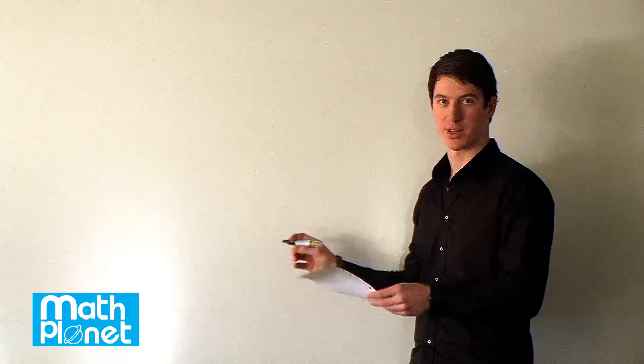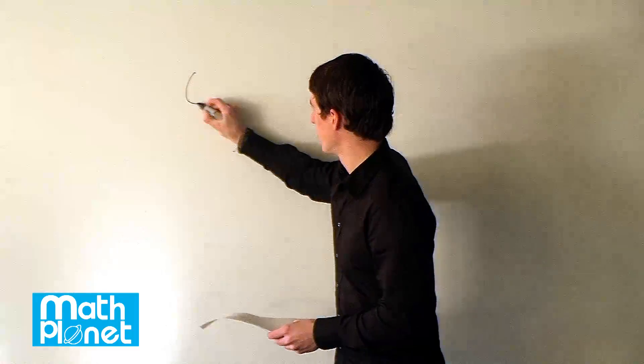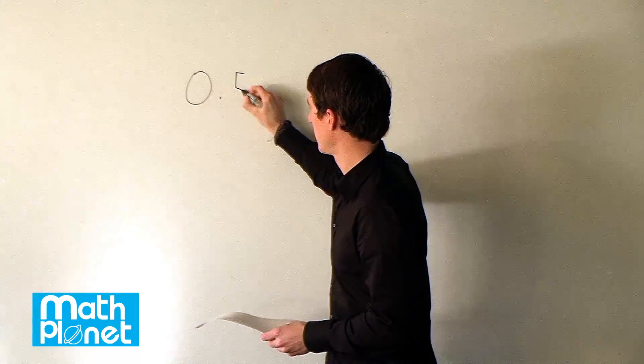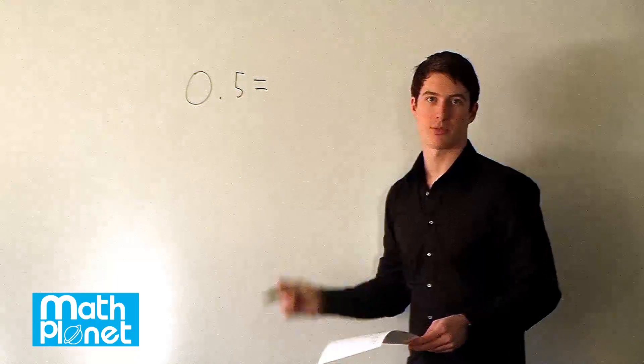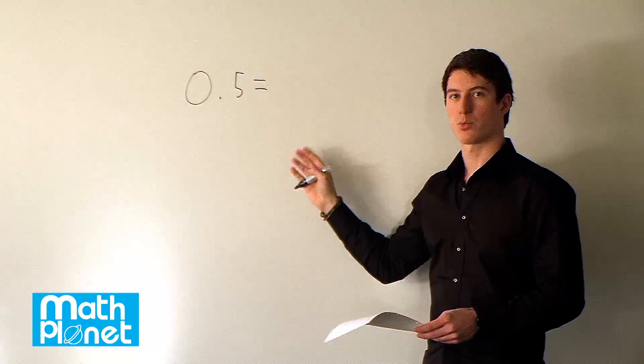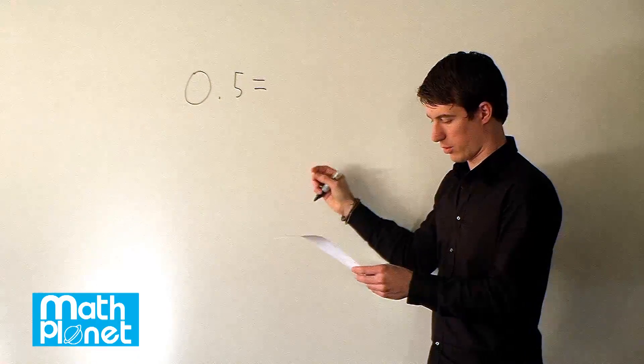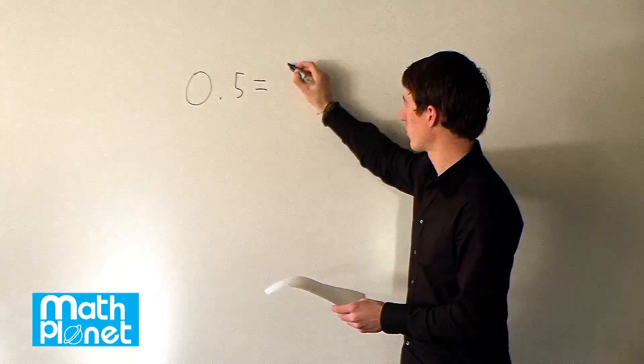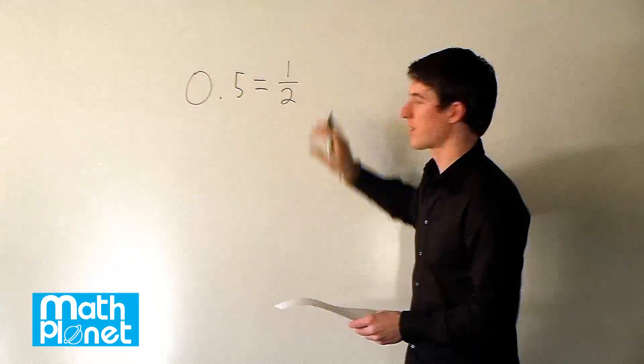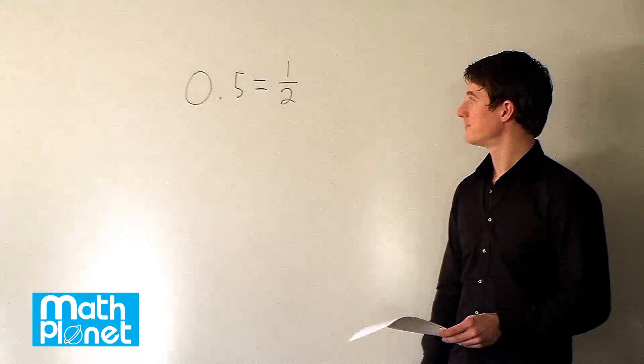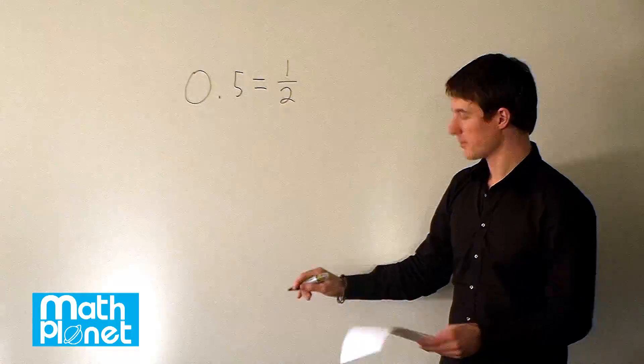We have a few different decimals here and we want to rewrite them as rational numbers. So 0.5 becomes a fraction, and then we can write that fraction as a rational expression. 0.5 becomes 1 half. So this is now a rational number, a rational expression. That's an easy one to do.